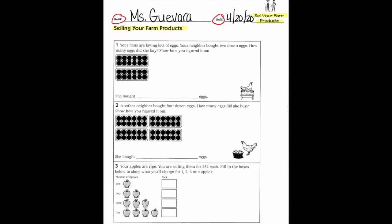We'll do number one together. It says your hens are laying lots of eggs. Your neighbor bought two dozen eggs. How many eggs did she buy? Show how you figured it out.